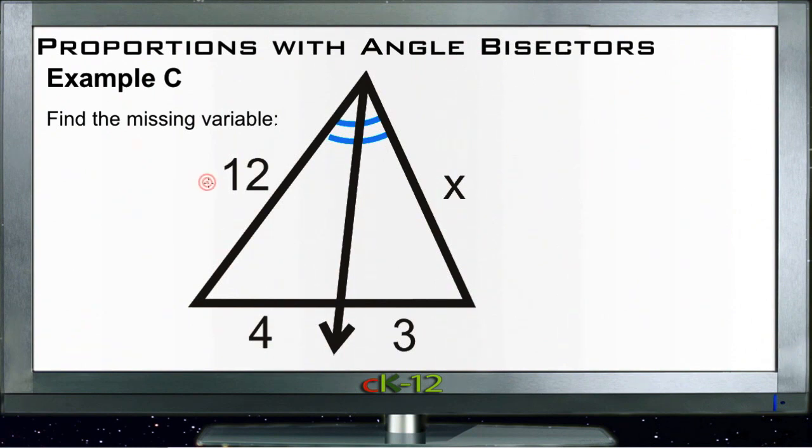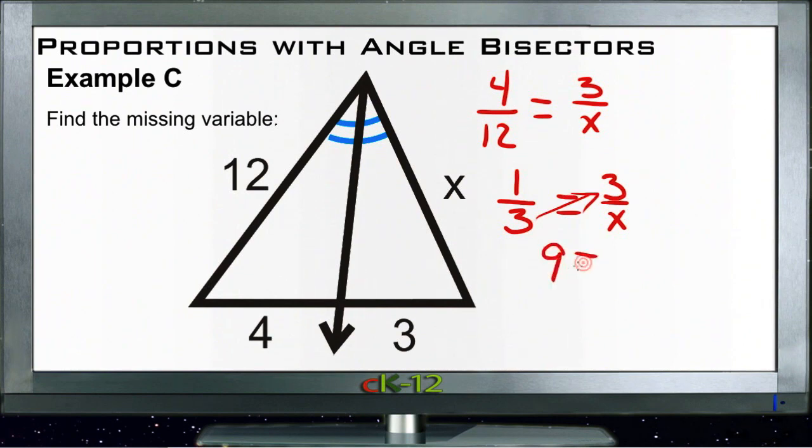Example C, find the missing variable. Again, another very similar question. So we have 12 compares to 4 in the way that x compares to 3. So we'll do 4, 12 equal to 3, x. 4, 12 reduces, 1 third equals 3, x. So I'm going to cross multiply. 3 times 3 is 9, x times 1 is x. X equals 9. There we go, all done.